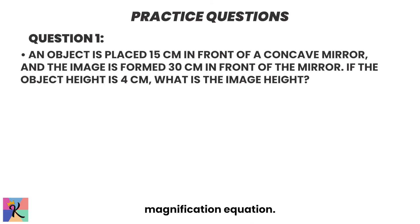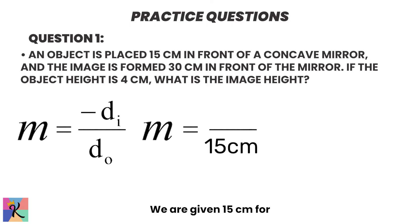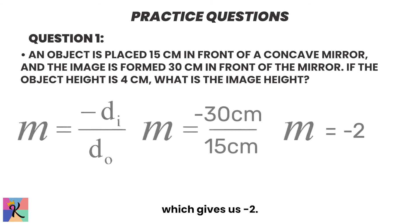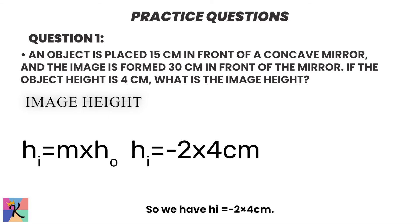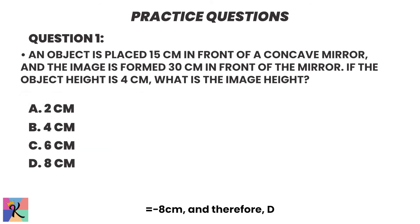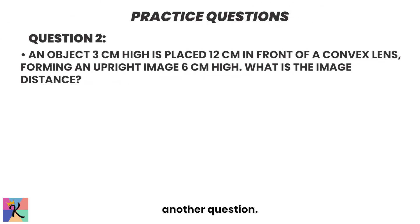Alright, so to solve this, we use the magnification equation. M equals negative DI over DO. We are given 15 centimeters for DO, and DI is 30 centimeters. So, M equals negative 30 over 15, which gives us negative 2. Now, we can calculate the image height. HI equals M times HO. So, we have HI equals negative 2 times 4 centimeters, which gives us HI equals negative 8 centimeters, and therefore, D is the correct answer.